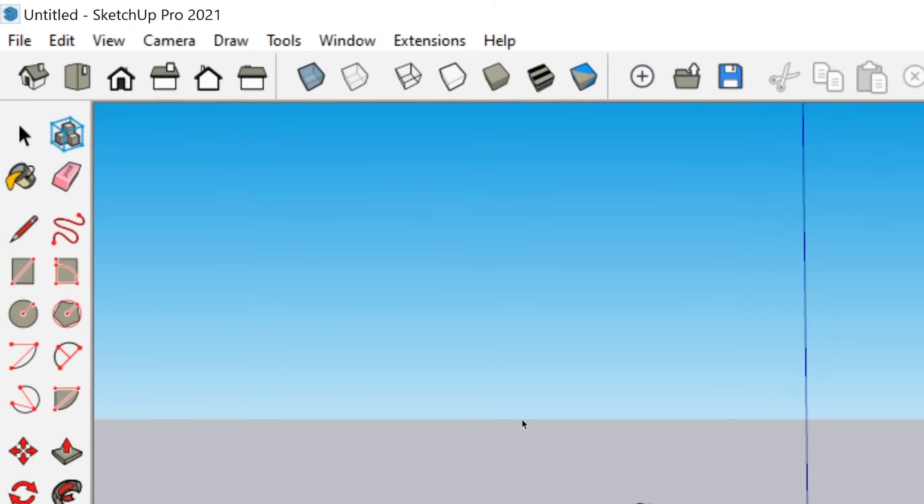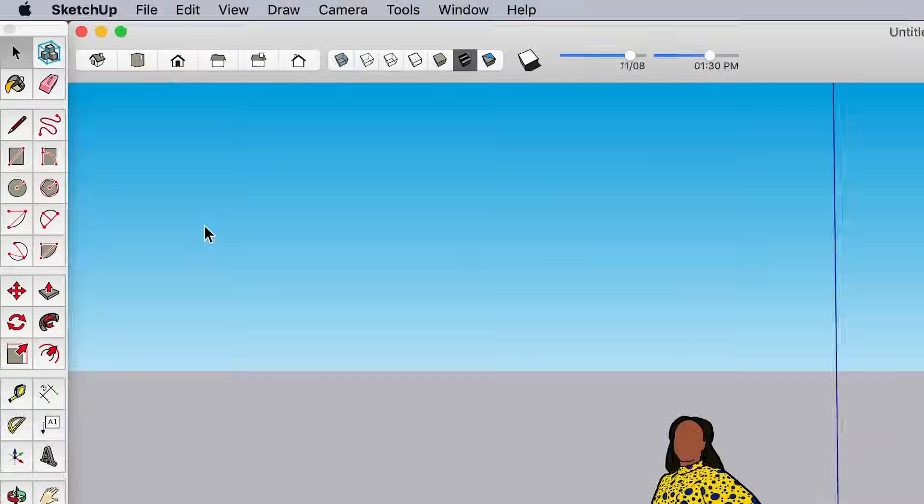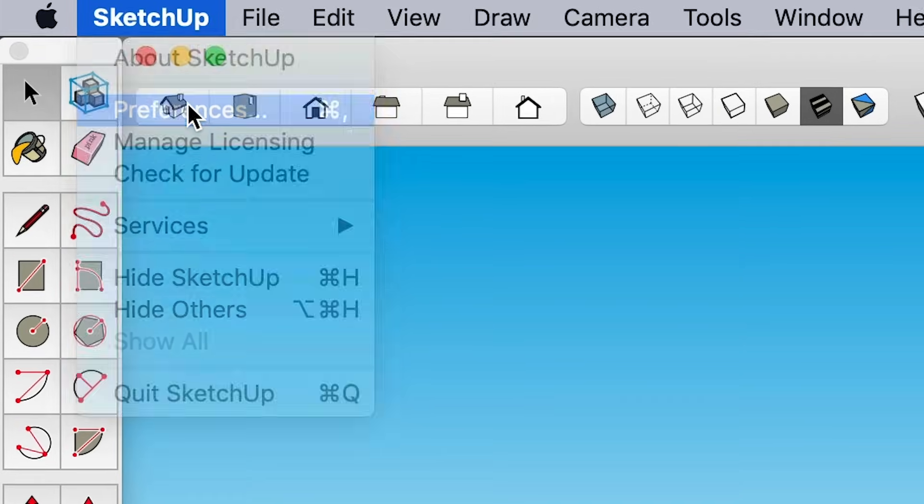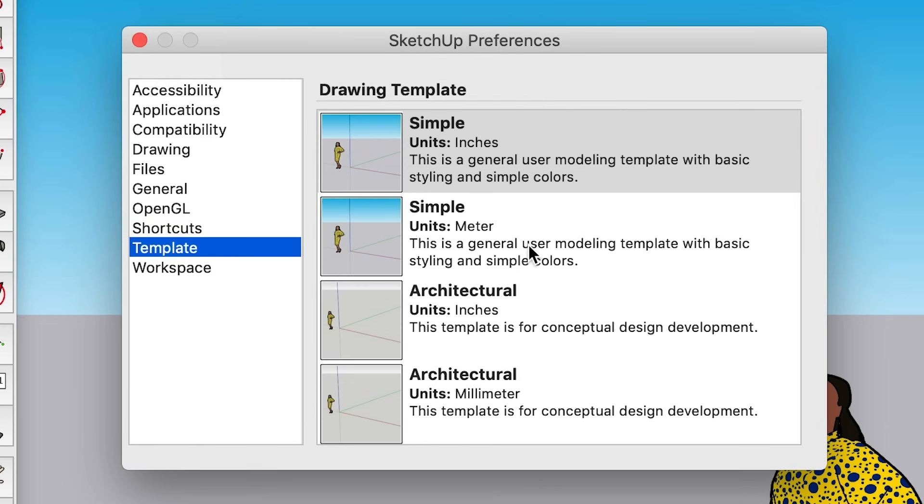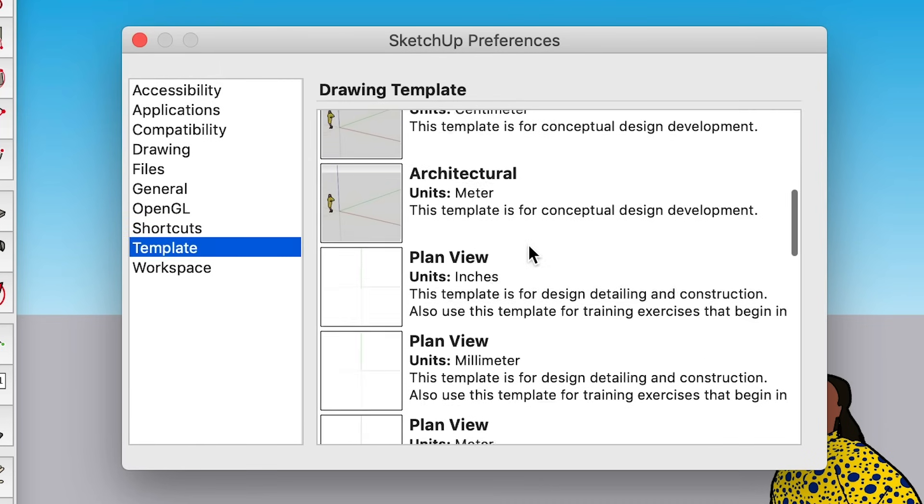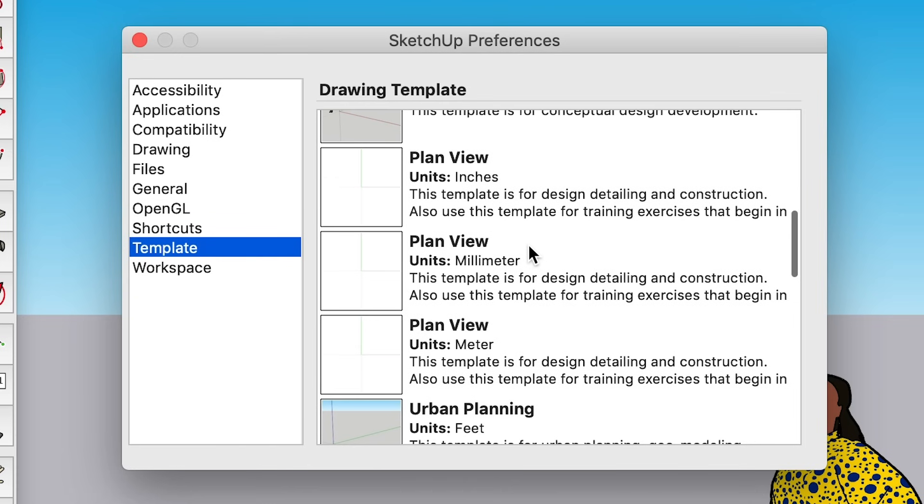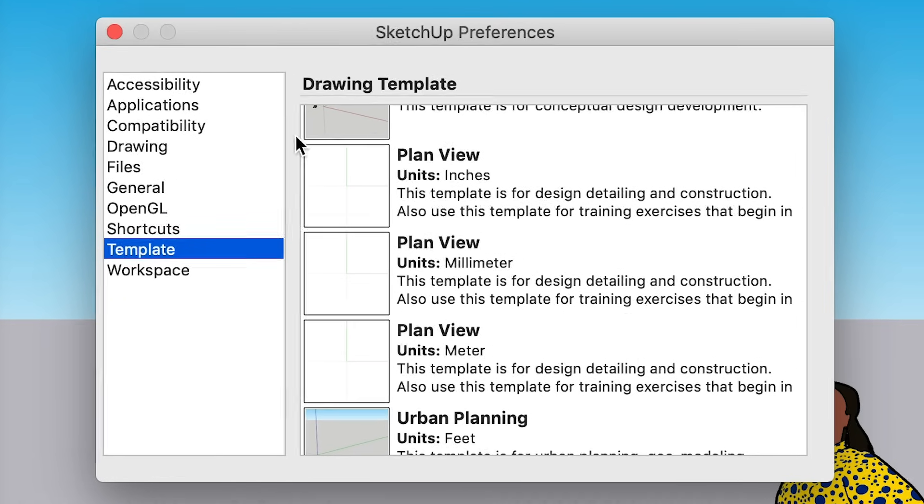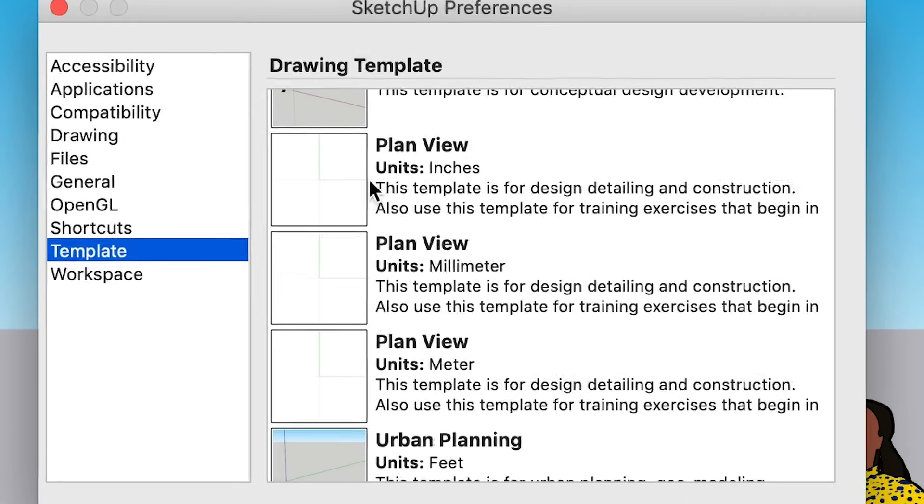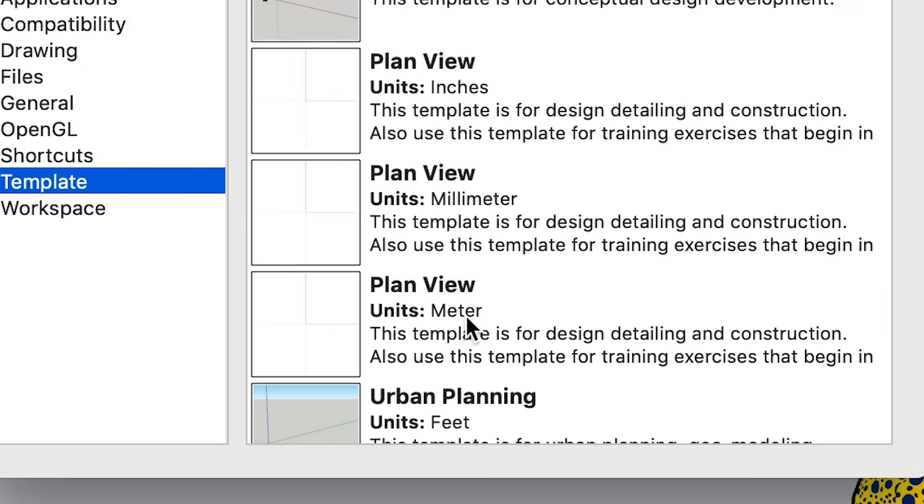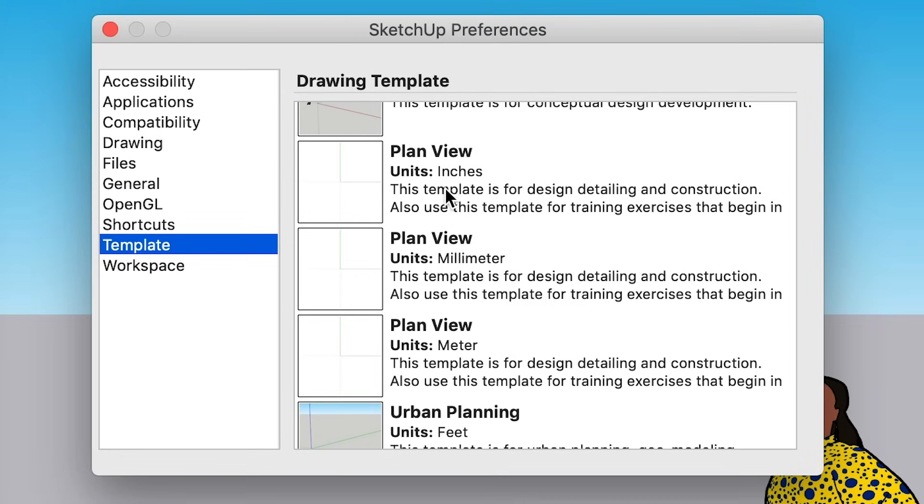This starts you off in calmer waters, allowing you to focus on learning the fundamentals and developing good habits that will pay off later. For SketchUp Pro, if you're a Windows user, you'll start by going to your top menu and selecting Window. If you're using SketchUp Pro on a Mac, you'll select SketchUp. From there, open the Preferences window and select Template.